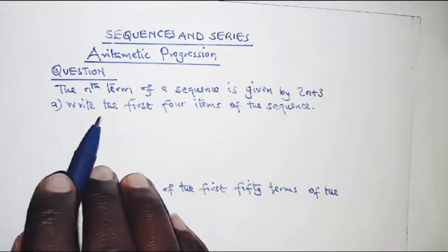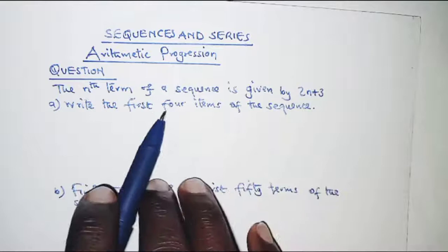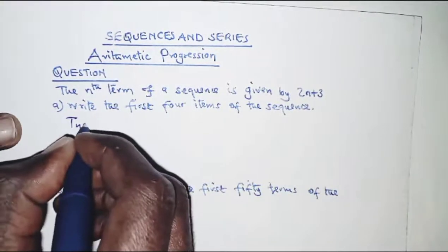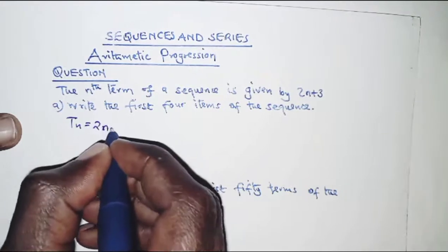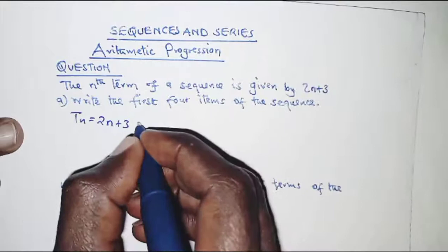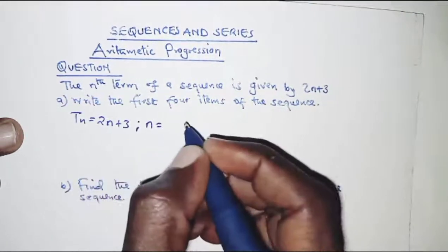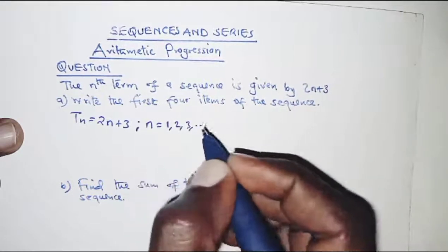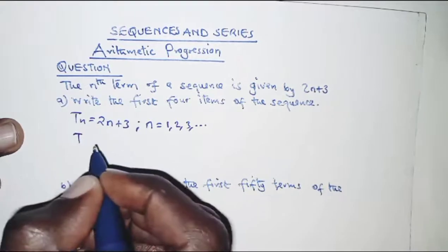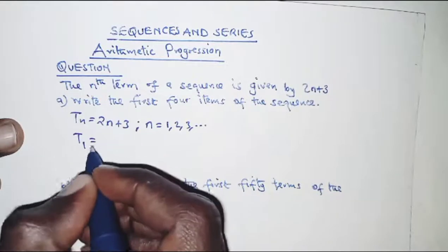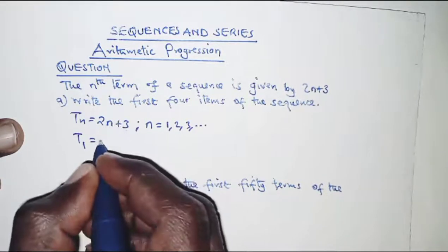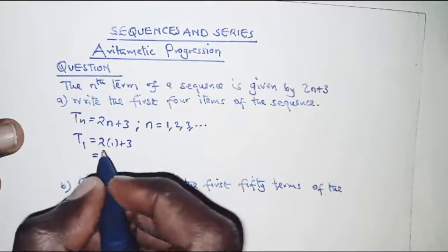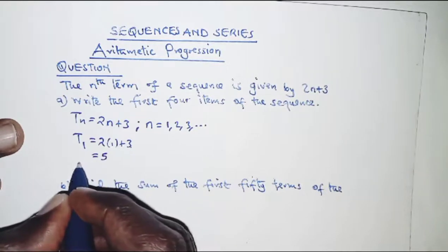For part a, we are to write the first four terms of the sequence. The nth term is given by 2n plus 3. Here n represents the term number — first term, second term, third term, and so on. To get the first term, we let n equal 1, so substituting: 2 times 1 plus 3 gives us 2 plus 3, which is 5.